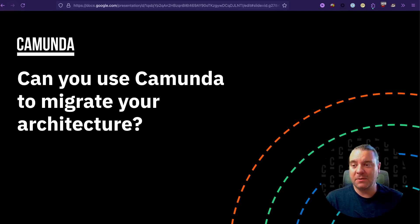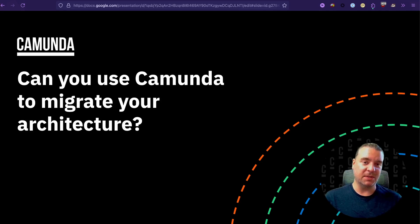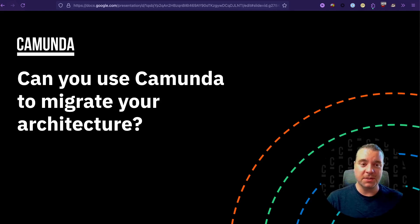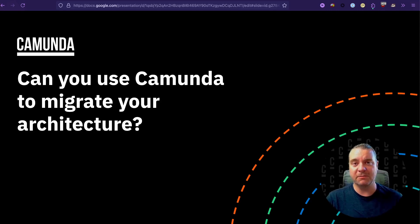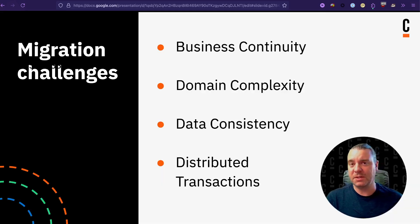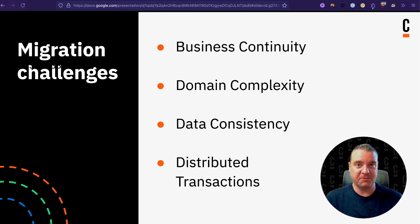I'm thinking about things closer to a development team — something closer to what engineering teams deal with on a daily basis. For instance, can we use Camunda to migrate from one cloud to another, or to migrate your architecture from a monolith to microservices? For the rest of this video I'll use that monolith-to-microservices example, though most of these concepts apply to any architecture migration. When doing that migration, there's always a set of challenges: business continuity, making sure the application doesn't fall down during the migration.